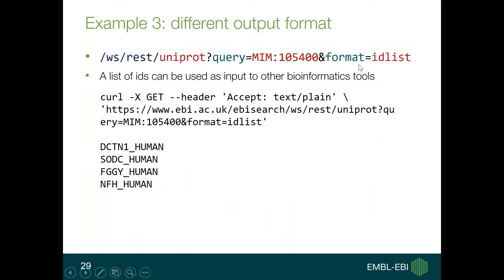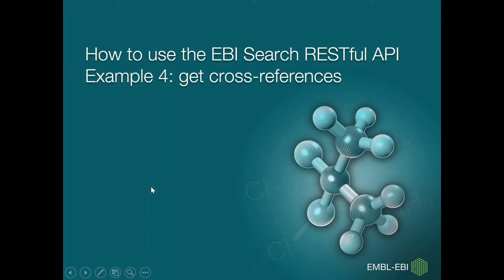If you are interested in using the output of this request in a different format, you can specify the format parameter as ID list. Having a list of IDs is useful because you can use the output directly as input to another bioinformatics tool — for sequence similarity search or multiple sequence alignment. Using the curl command with format set to ID list, you will get a short list of four proteins that can then be used.